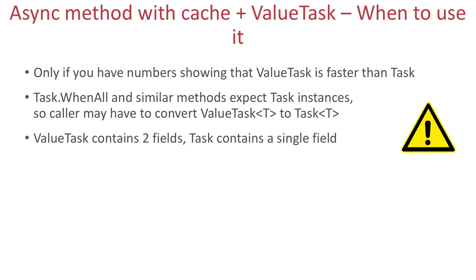The official recommendation from Microsoft is to always use Task by default, and only try ValueTask in performance-critical scenarios where you measure and confirm it beats the task-based implementation. ValueTask also adds additional overhead — for example, if the caller uses Task.WhenAll or Task.WhenAny, then the ValueTask has to be converted into a Task, giving you the overhead of both. Also, ValueTask contains two fields internally while Task contains only one. Therefore, the default choice should still be Task and Task<T>.